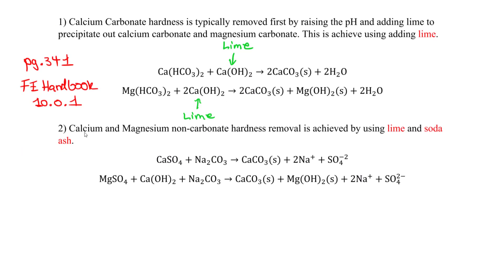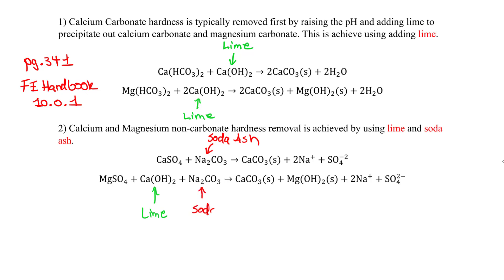For calcium and magnesium noncarbonate hardness, which we also have to treat, a combination of lime and soda ash is used. For the calcium noncarbonate reaction we add soda ash, and for magnesium noncarbonate we add both lime and soda ash. These reactions are also provided on the same page.